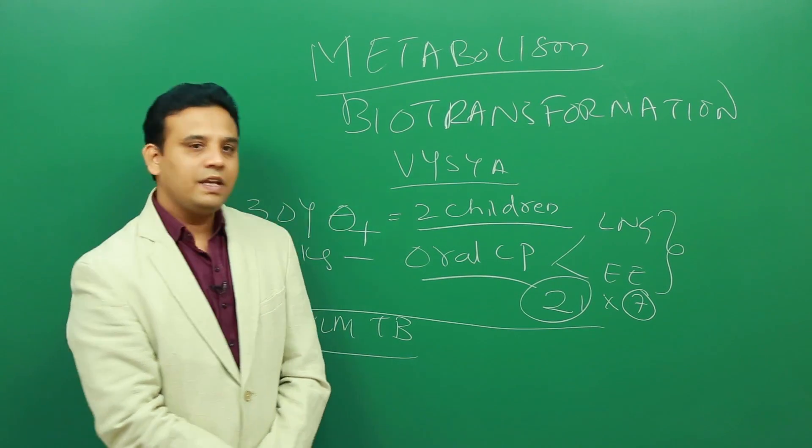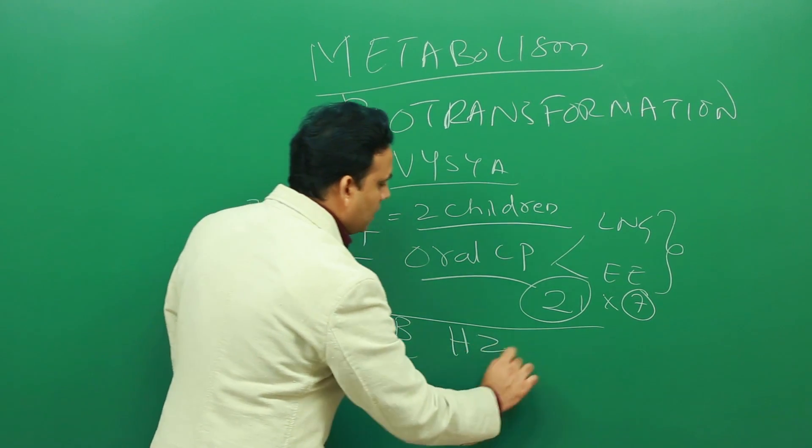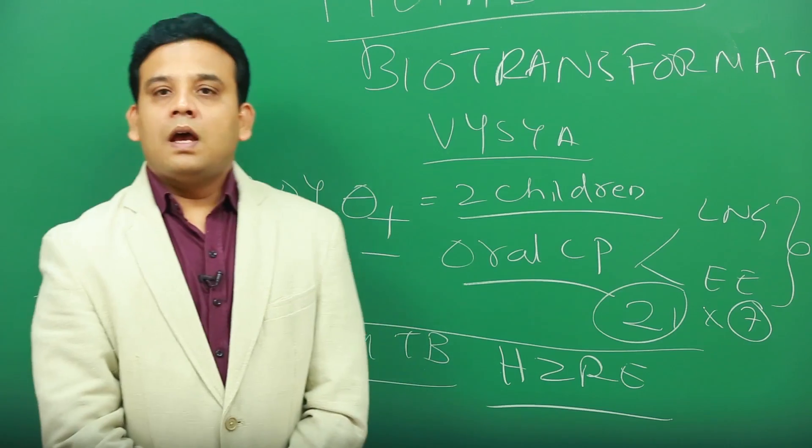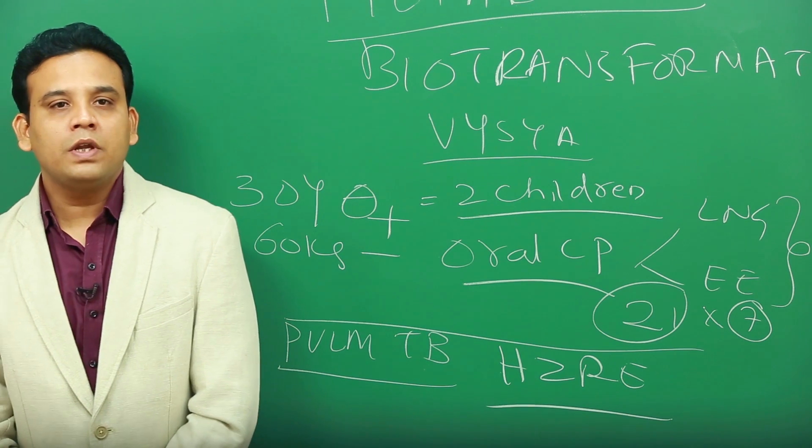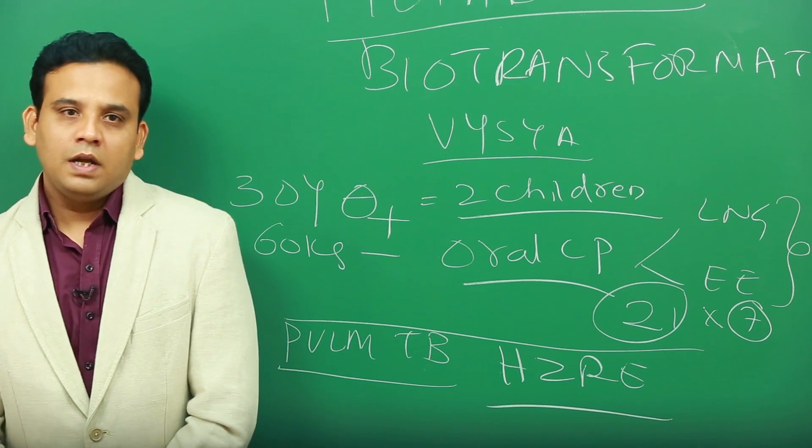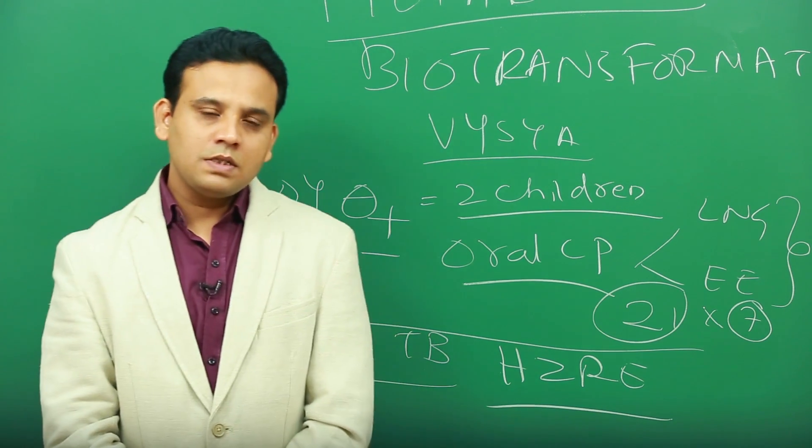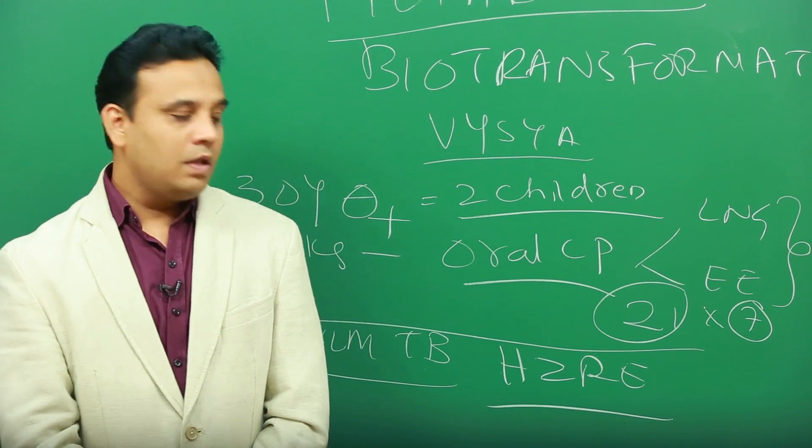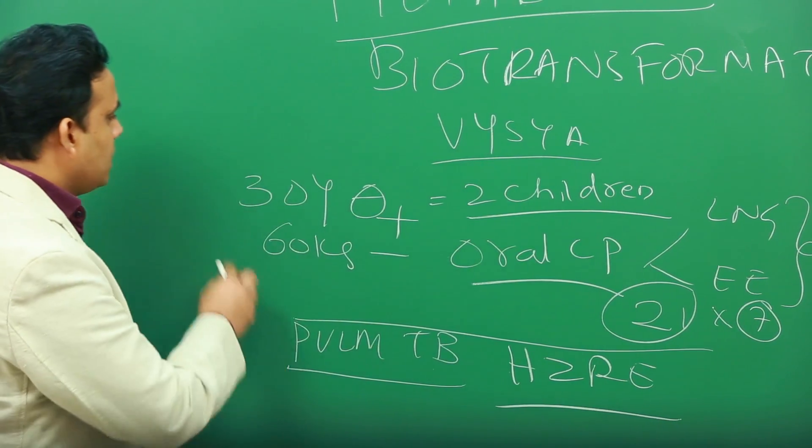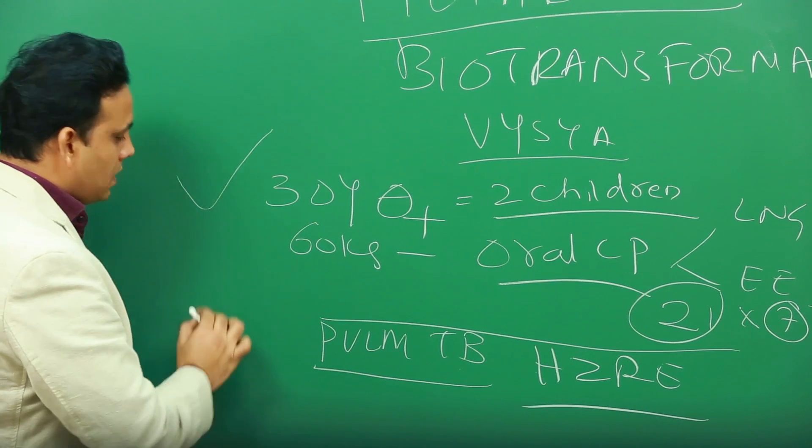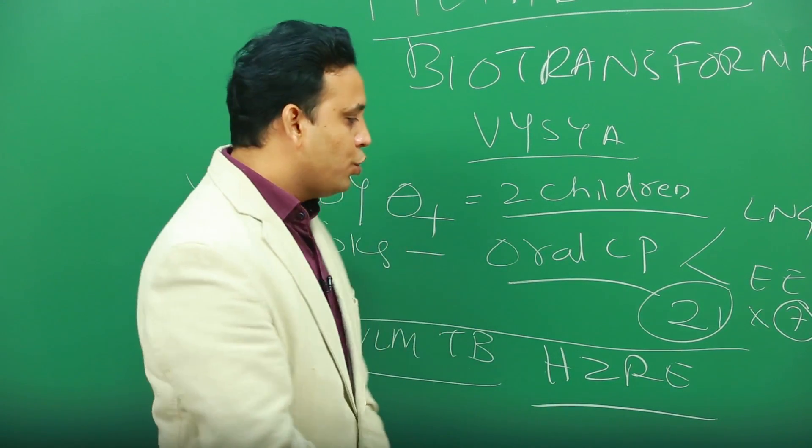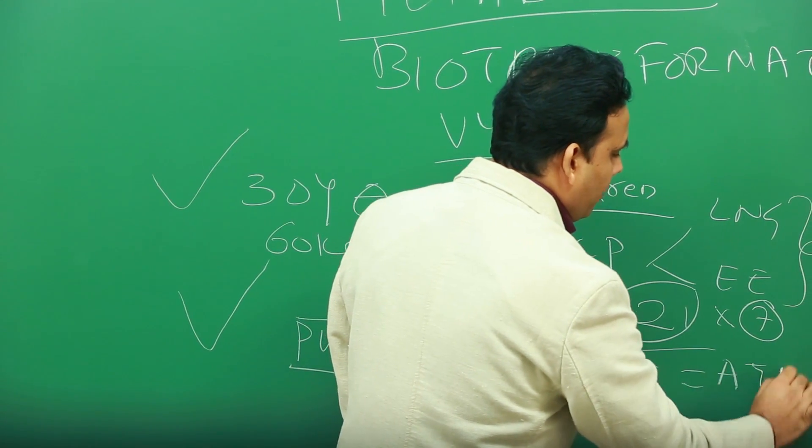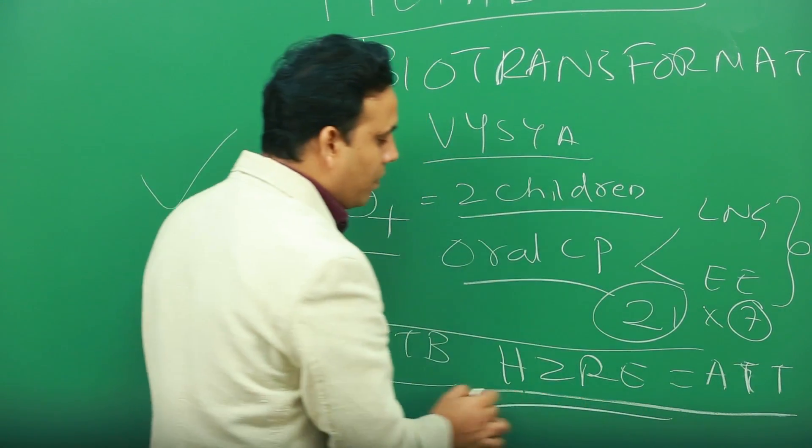During the course of this, she has developed pulmonary tuberculosis. Obviously, when there is pulmonary tuberculosis, our drug of choice will be HRZE - that is isoniazid, rifampicin, pyrazinamide, and ethambutol, which we usually give to the patient. It is given thrice weekly or on a daily basis. She is taking oral contraceptive pills and at the same time she is taking anti-tuberculosis drugs.